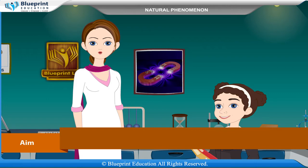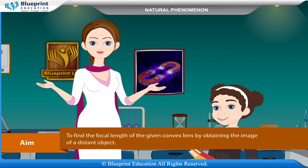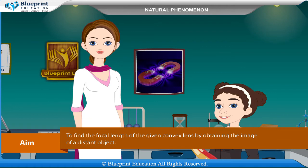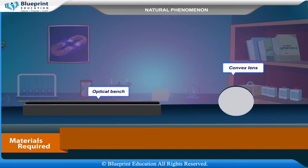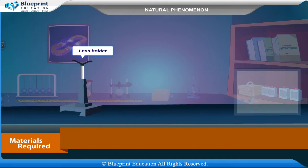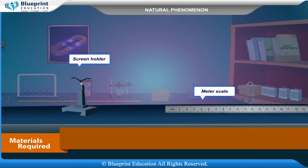The aim of this experiment is to find the focal length of the given convex lens by obtaining the image of a distant object. The materials required are: optical bench, convex lens, lens holder, screen, screen holder, and meter scale.